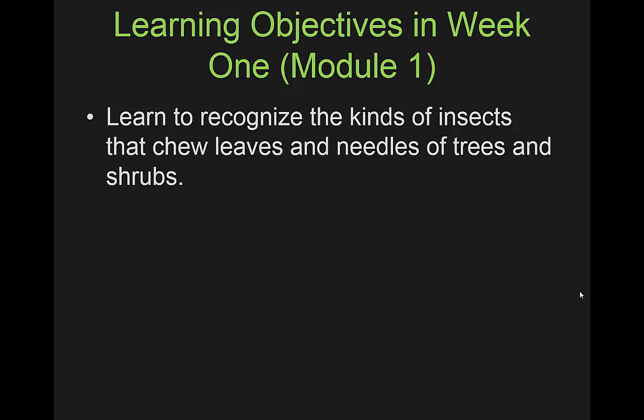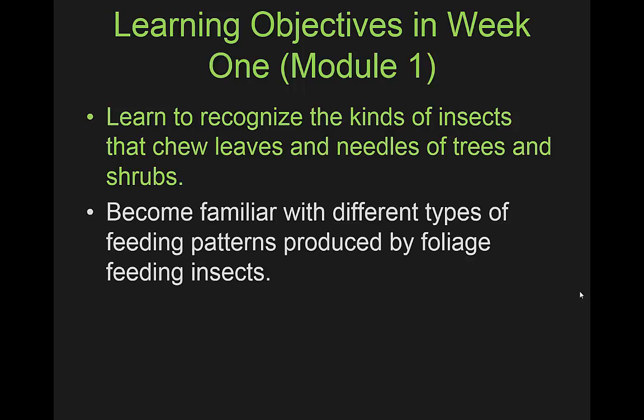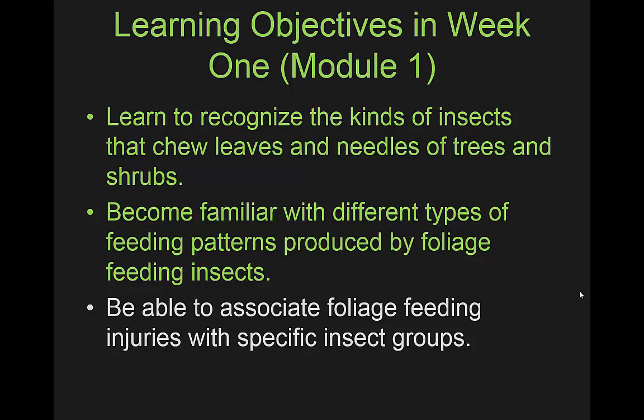The first week we want to learn to recognize the kinds of insects found chewing leaves and needles of trees and shrubs. We'll also become familiar with different patterns of injuries associated with different kinds of insects and the way they feed. Some may feed on the edge of the leaf, skeletonize a leaf, or shot-hole the leaf. Some may produce webbing in the course of feeding. We want to be able to associate foliage feeding injuries with specific insect groups, as these can often be quite specific - we can diagnose problems sometimes based just on what kind of feeding we see on a plant, even without the insect being present.